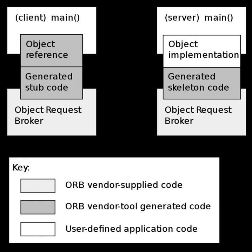The GIOP is an abstract protocol by which object request brokers communicate. Standards associated with the protocol are maintained by the Object Management Group. The GIOP architecture provides several concrete protocols, including the Internet Inter-ORB Protocol (IIOP), which provides a mapping between GIOP messages and the TCP/IP layer; SSL-IOP, which is IIOP over SSL providing encryption and authentication; Hypertext Inter-ORB Protocol (HTIOP), which is IIOP over HTTP providing transparent proxy bypassing; and ZIOP, a zipped version of GIOP that reduces bandwidth usage.